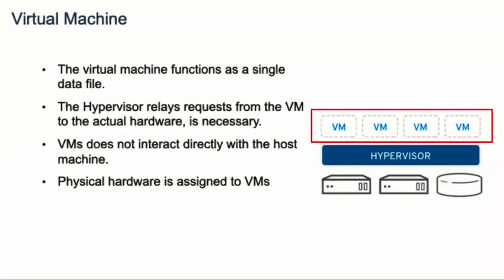Virtual machines are basically a single data file — just like any digital file, they can be moved from one computer to another. You can create a virtual machine on one computer, copy that file, put it in another hypervisor of the same type, and it should run exactly the same. The hypervisor relays all requests from the virtual machines onto the hardware itself, so virtual machines do not interact directly with the hardware. Physical resources like RAM and disk are allocated in pieces to different virtual machines through the hypervisor. For example, if you have 8 GB of RAM, you could allocate 1 GB to each virtual machine.